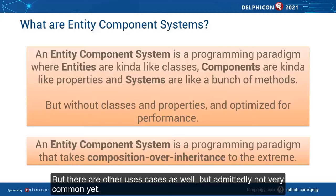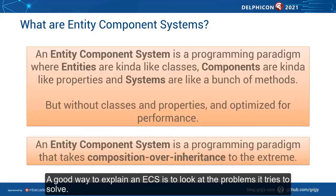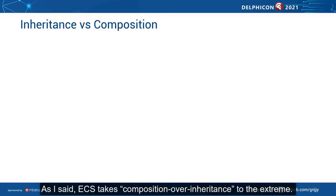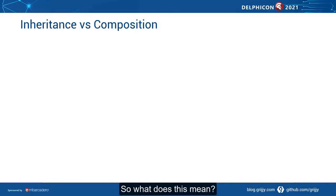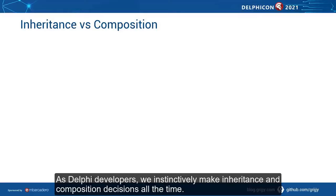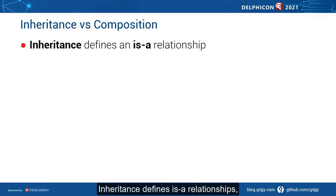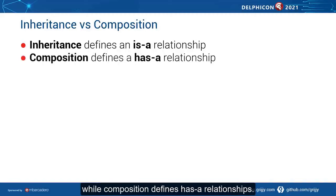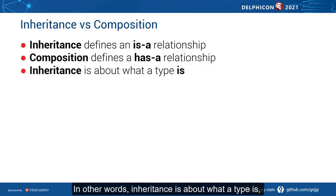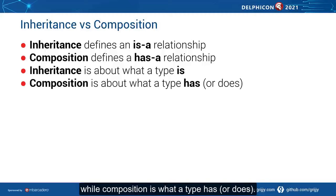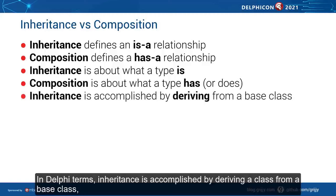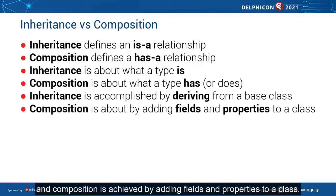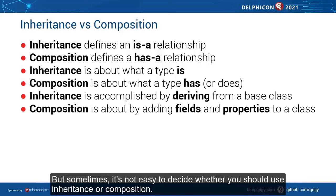A good way to explain an ECS is to look at the problems it tries to solve. ECS takes composition over inheritance to the extreme. As Delphi developers, we instinctively make inheritance and composition decisions all the time. Inheritance defines is-a relationships, while composition defines has-a relationships. In other words, inheritance is about what the type is, while composition is about what the type has or does. In Delphi terms, inheritance is accomplished by deriving a class from a base class, and composition is achieved by adding fields and properties to a class. But sometimes it's not easy to decide whether you should use inheritance or composition.